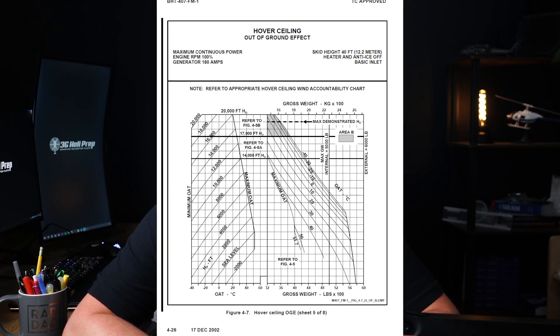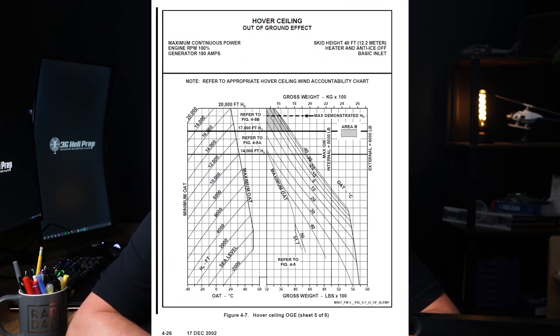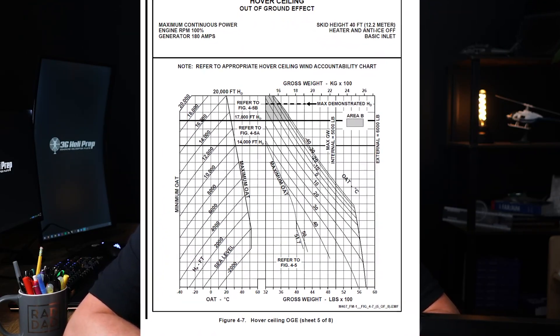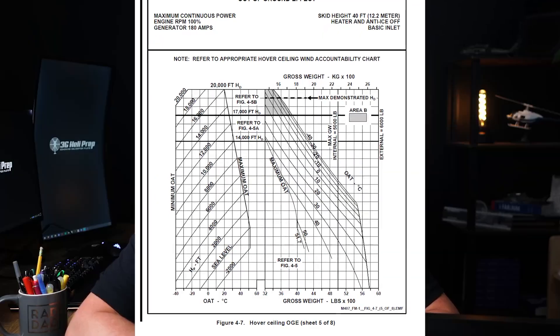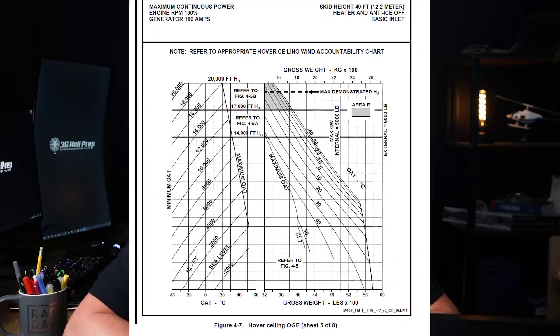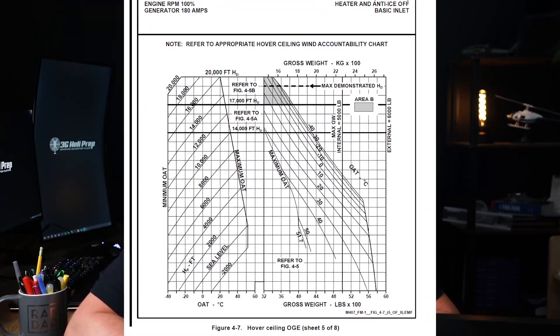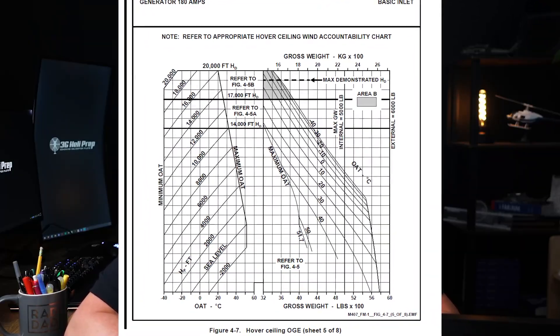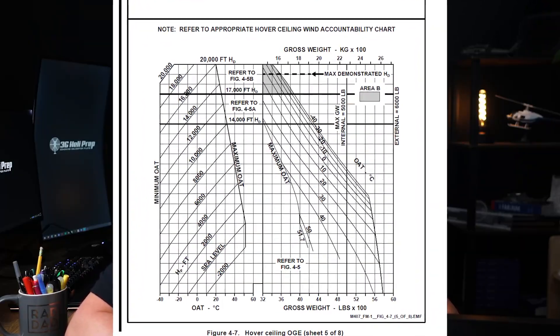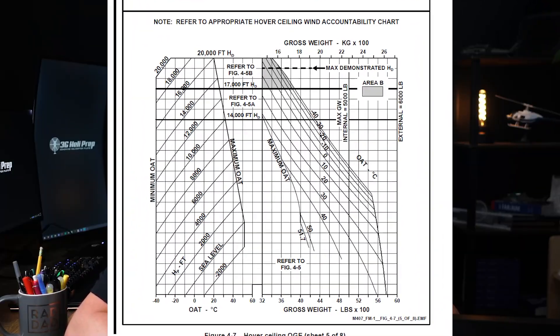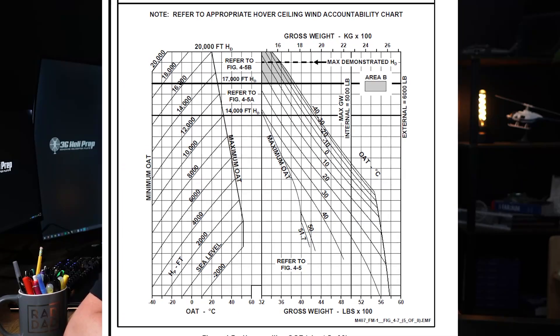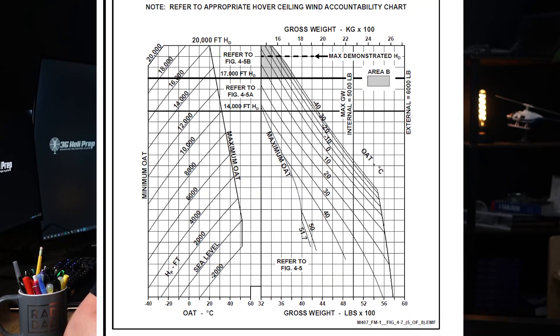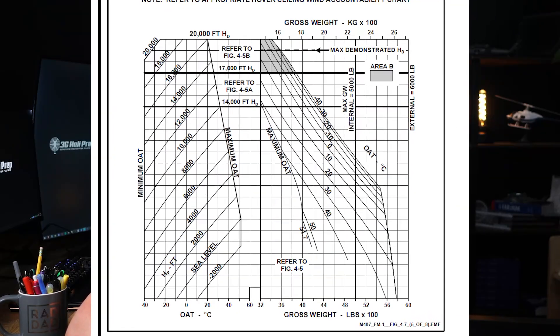The ISA is important because it helps pilots and engineers predict how the aircraft will perform under different conditions. For example, when you're flying at higher altitudes, the air is thinner, which affects lift, engine performance, and more.